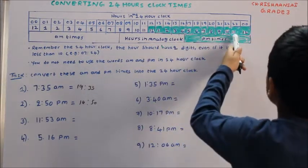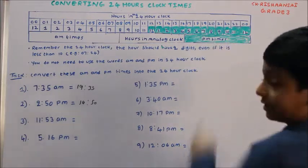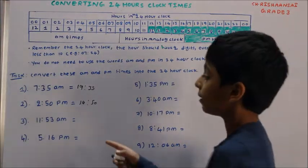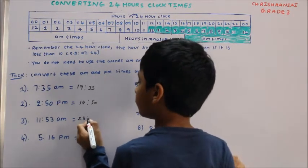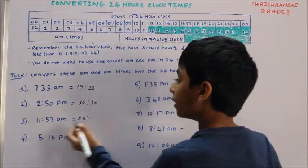Here is 11 and up there is 23, so we need to write 23 over here. And put two dots and write 53.